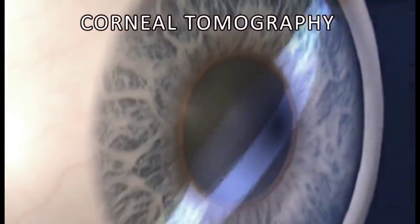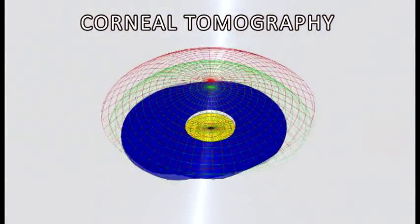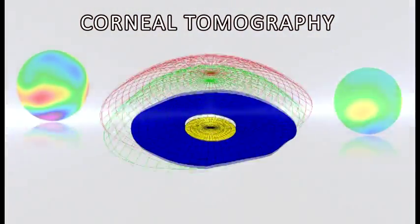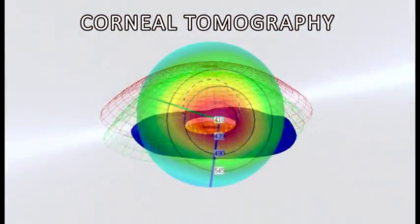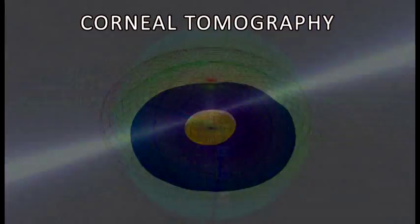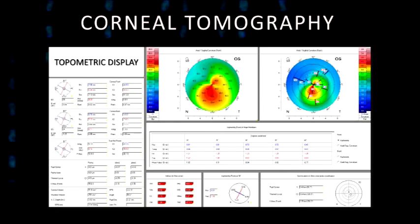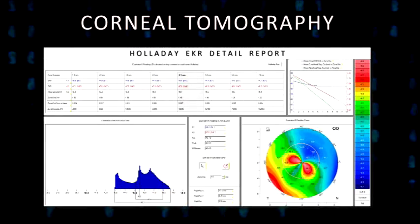Corneal tomography enables calculations of curvature and elevation maps of both the front and back surfaces of the cornea, along with pechometric mapping. Profuse amount of information is generated, which may challenge the clinician when interpreting the data.